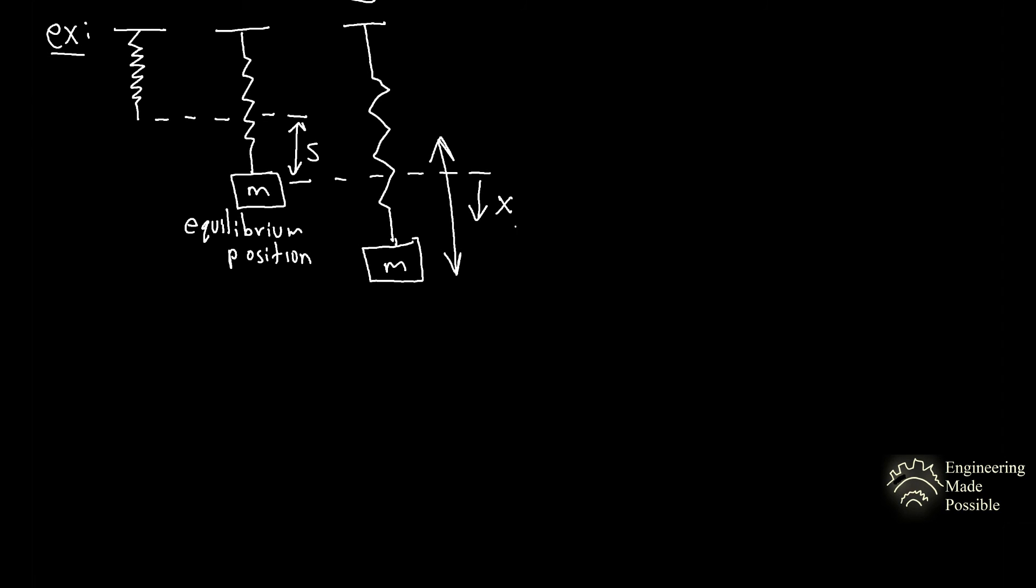And let's assume downward direction is positive for this case. So this would be nothing more than a force balance, right? So let's go with equilibrium position. At this position, let's simplify a bit. We'll draw that box with mass m as a dot. You have your mass times gravity straight down, and then you have your spring, which is your spring constant times the s that was originally displaced.